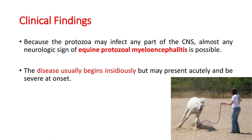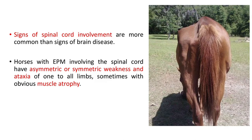Because the protozoa may infect any part of the CNS, almost any neurologic sign of EPM is possible. The disease usually begins insidiously but may present acutely and be severe at onset. Signs of spinal cord involvement are more common than signs of brain disease, and horses with EPM involving the spinal cord have asymmetric or symmetric weakness and ataxia of one to all limbs, sometimes with obvious muscle atrophy.